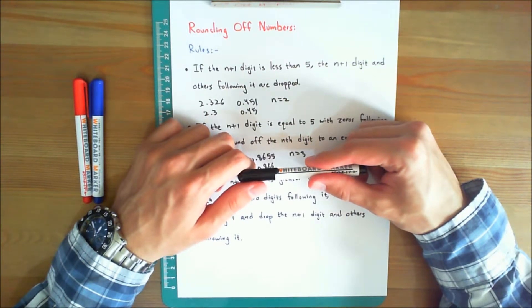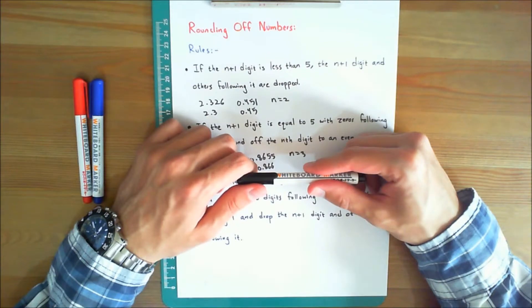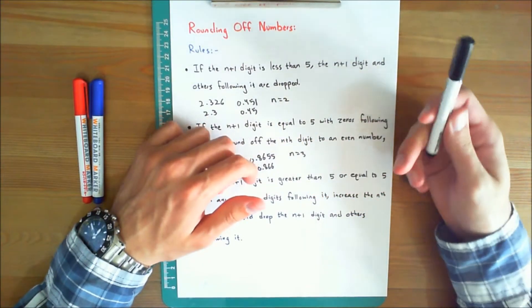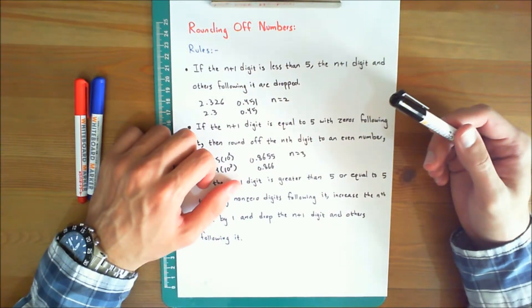but often handheld calculators or computers involve more figures in the answer than the number of significant figures used for the data. For this reason, a calculated result should always be rounded off to an appropriate number of significant figures. To convey appropriate accuracy, the following rules for rounding off a number to n significant figures apply.